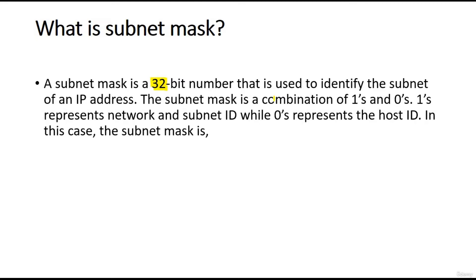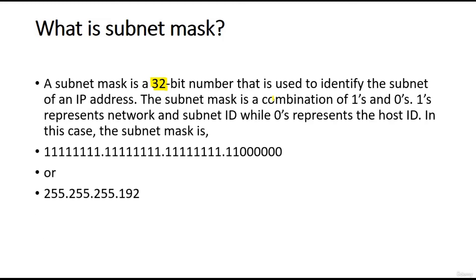Computers understand 1s and 0s, so the subnet mask is a combination of binary digits. For example, 255.255.255.0 in decimal notation corresponds to a specific binary representation. Each 255 represents 8 bits all set to 1, making up the full 32-bit subnet mask.